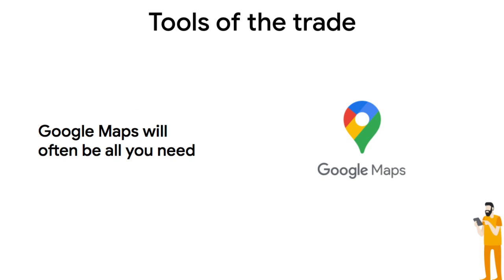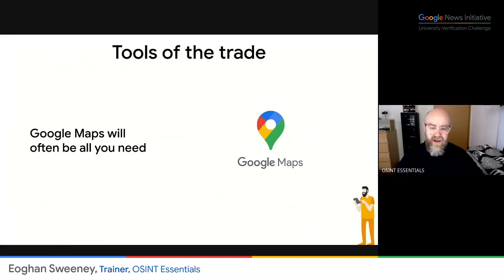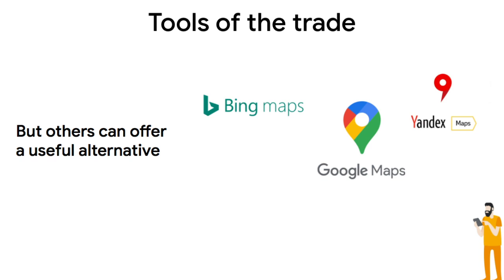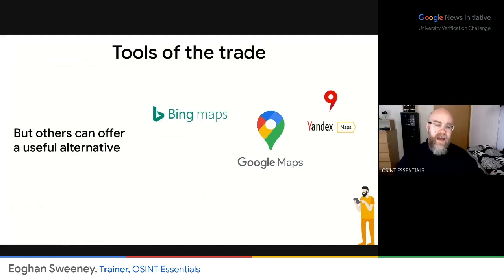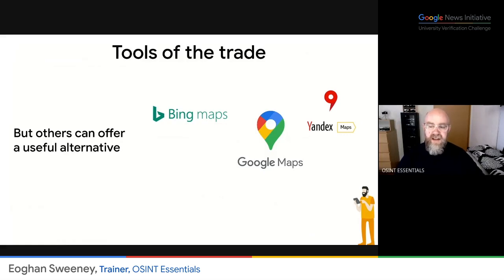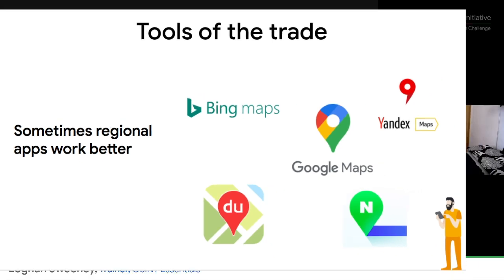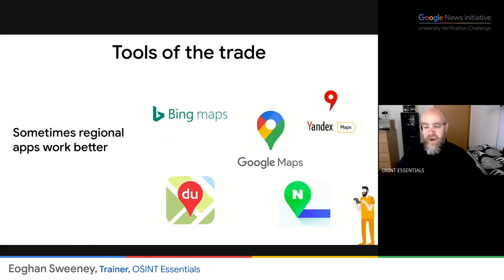Google Maps will generally be all you need because it's very detailed, it has a huge index of imagery, and it's also very user friendly. But there will be times when it's helpful to use other apps. For example, Bing Maps from Microsoft has some alternative views of areas that Google may not have, and sometimes it has higher resolution in certain areas. Yandex Maps from Russia can be very good in Eastern Europe — so if you're looking for stuff from Belarus, Ukraine, Russia, or similar countries, Yandex often has the best imagery available. And then on a regional basis there will be apps that, because of their presence in a region, are particularly good for material from that area — for example, Baidu or Naver Maps.